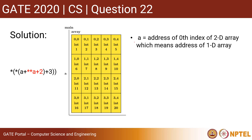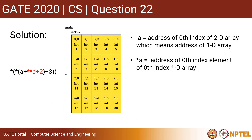Let us understand what `a` is. `a` is basically the address of the 0th index of the 2D array. This whole 2D array has index 0, index 1, index 2, and index 3. So `a` denotes the address of the 0th index — that is, the address of the 0th 1D array. Now if we add a dereferencing operator to `a`, that is `*a`, it will denote the address of the 0th index element of the 0th index 1D array.